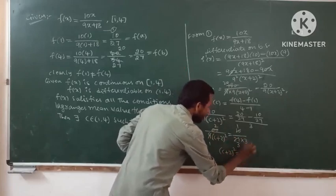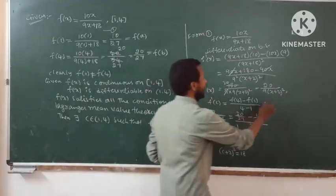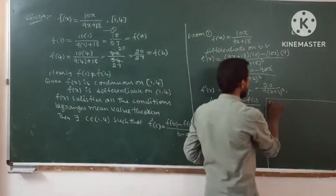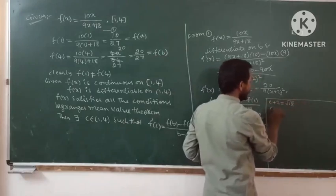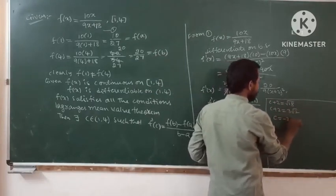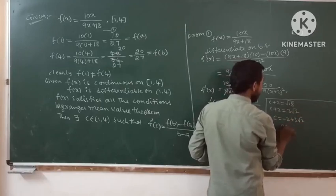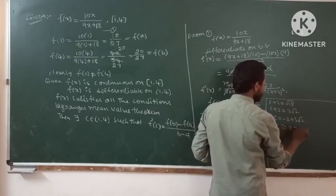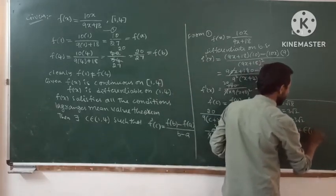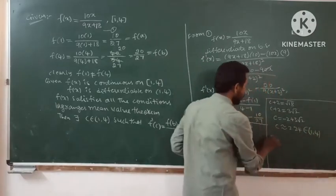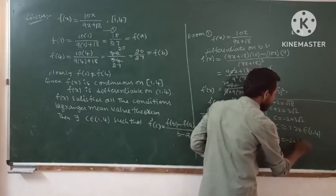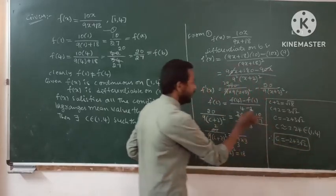Cross-multiplying: (c + 2)² = 18. Taking the square root: c + 2 = √18 = 3√2. Therefore, c = −2 + 3√2, which is approximately 2.24. This value lies in the interval (1, 4), so our required solution is c = −2 + 3√2.